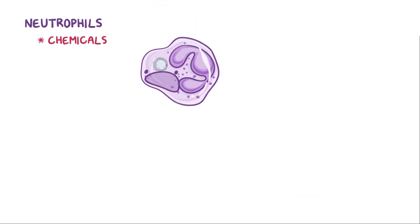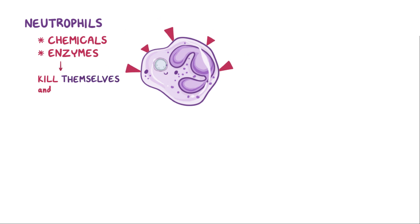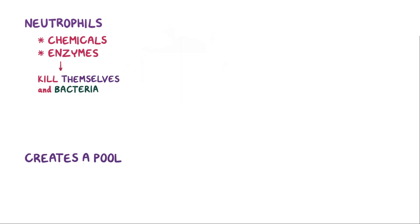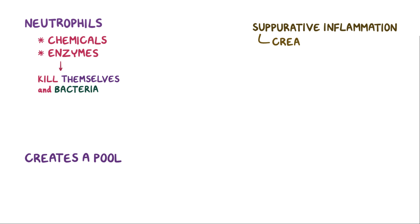The first immune cells at the scene are neutrophils, and they release chemicals and enzymes that kill themselves and the bacteria they swallow up, creating a pool of dead bacteria in cells. This is a specific type of acute inflammatory response called suppurative inflammation, which simply means that pus is created in the process.